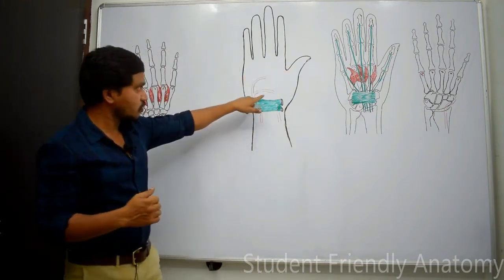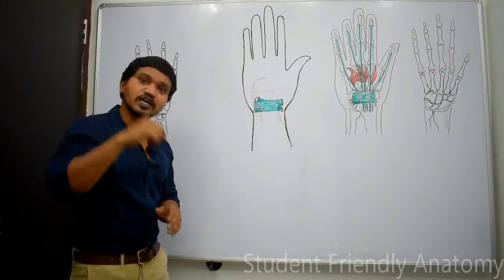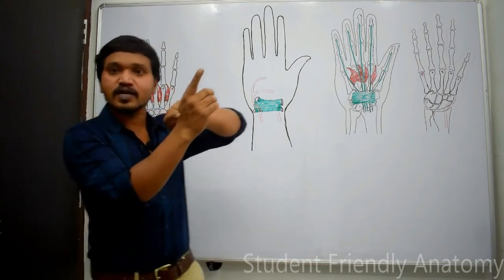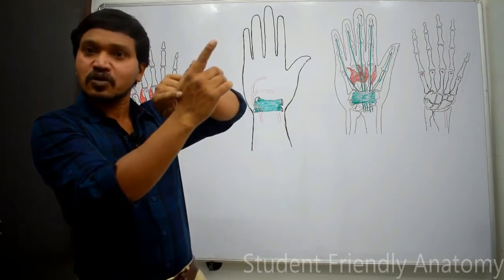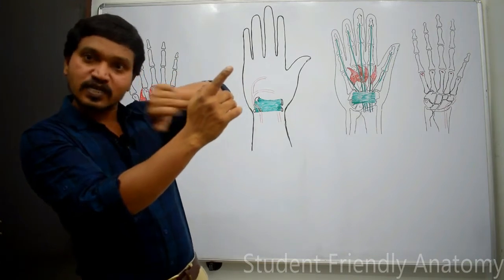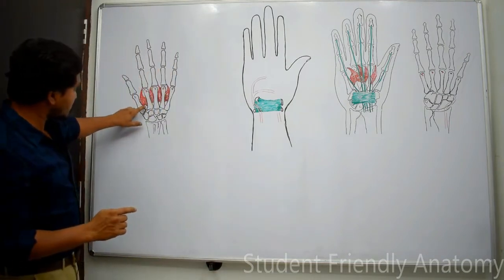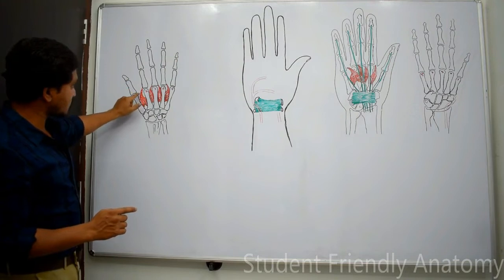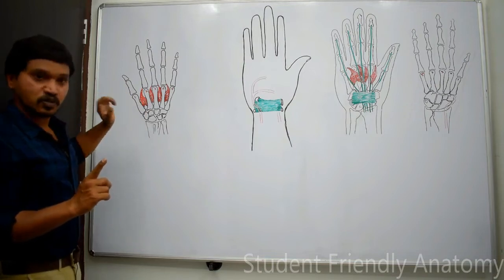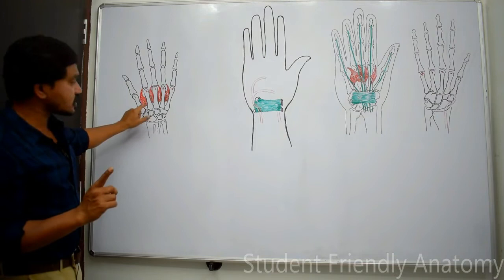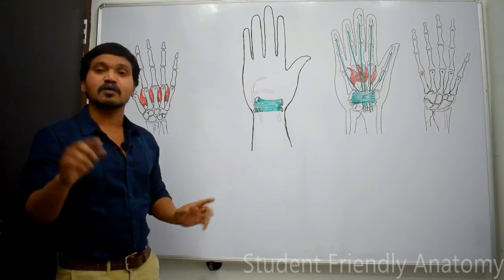The deep branch of the ulnar artery is present in the palmar aspect and must anastomose with the main continuation of the radial artery. Since the radial artery is in the dorsal aspect after passing through the anatomical snuff box, it needs to enter the palm. It does so by passing through the gap between the two heads of the first dorsal interosseous muscle, then entering the palm and anastomosing with the deep branch of the ulnar artery to complete the deep palmar arch.